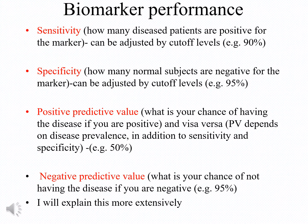Another important attribute is called positive predictive value, defined as the chances of somebody who is positive for a test to have the disease. For example, if the positive predictive value is 50%, it means that if somebody does the test and is positive, they have a 50% chance of having the disease.